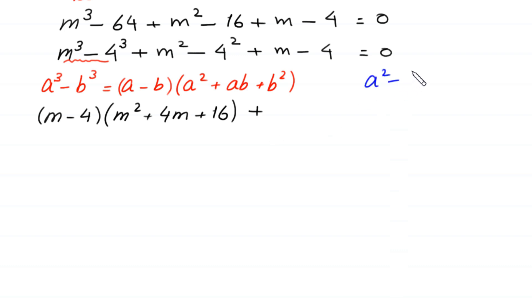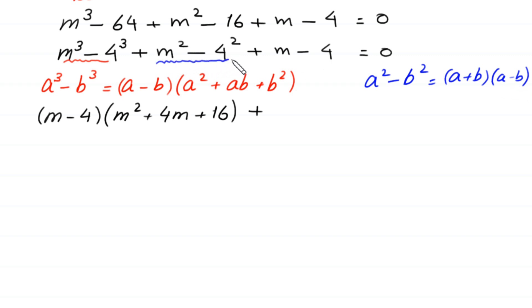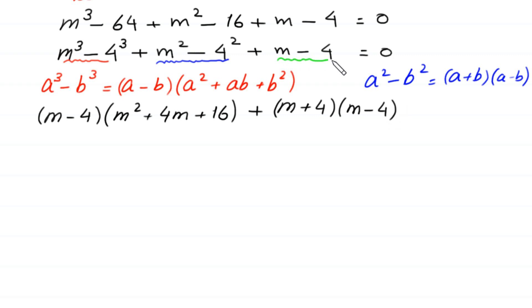Using the identity a squared minus b squared equals a plus b times a minus b, the term m squared minus 4 squared can be factorized as m plus 4 times m minus 4. Also, m minus 4 equals 1 times m minus 4. So we can factor out m minus 4 as a common factor, leaving m minus 4 times the bracketed expression equals 0.